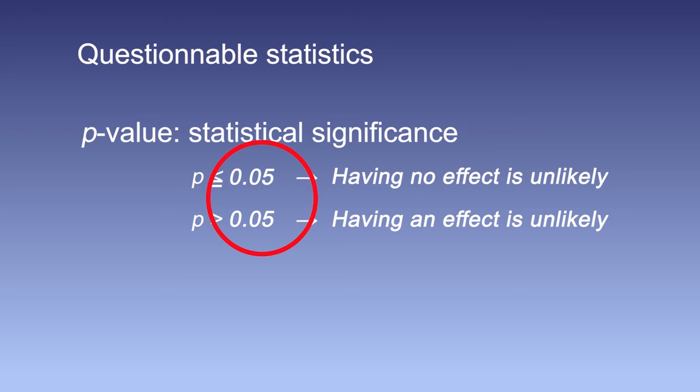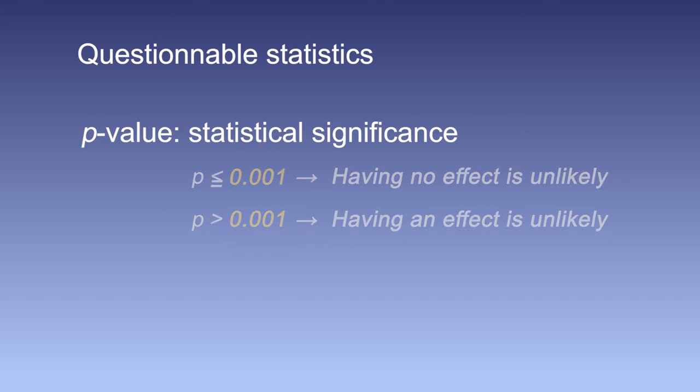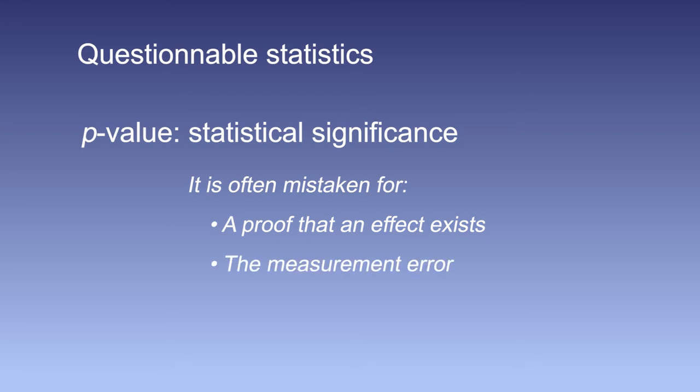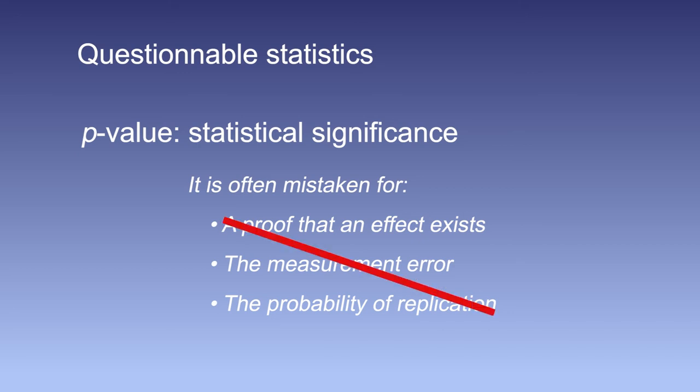However, this threshold of 0.05 is under attack. It was chosen by convention, but some claim it should be set to 0.01 or even smaller. If so, it would make almost all empirical studies irrelevant. Another issue is that the p-value is often misunderstood. It is often mistaken for a proof that an effect exists, it is often mistaken for an error state, and it is often mistaken for the probability of a successful replication. That is all incorrect.